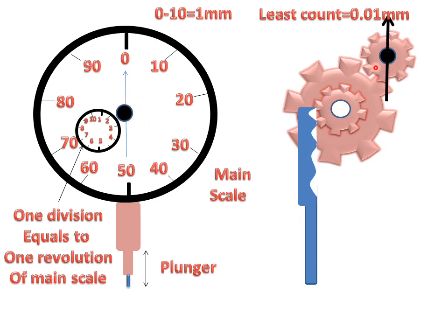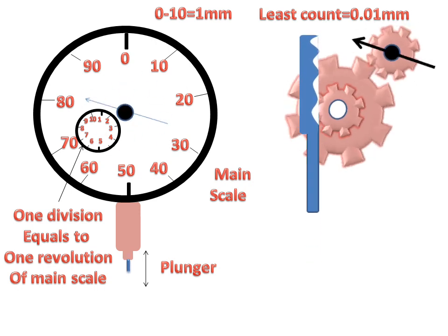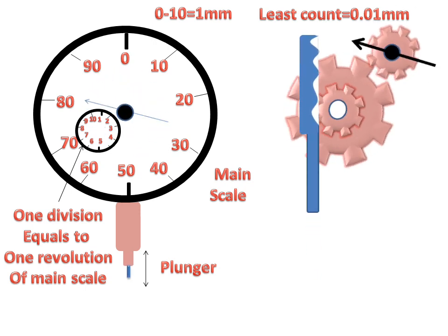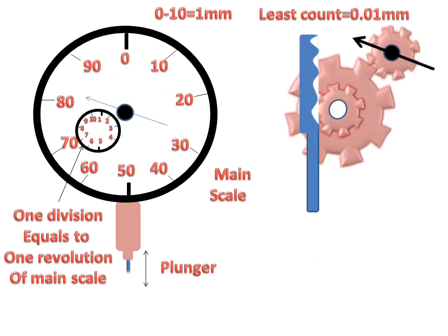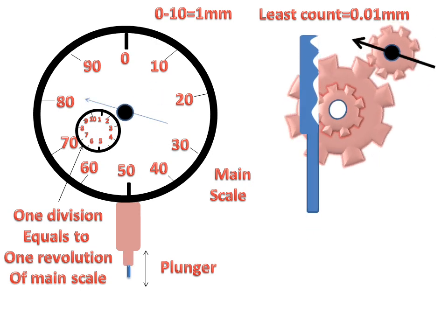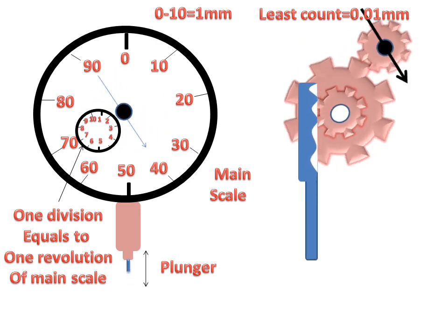This is attached with a gearing arrangement. When the plunger moves upward, the gearing will work and the pointer will move in the dial gauge. We can then record the reading of the dial gauge indicator. This is the working of the dial gauge indicator with the help of the plunger and gearing arrangement.